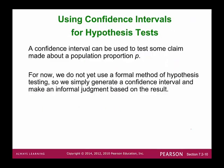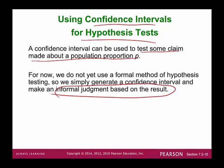A confidence interval could be used to test some claim made about the population proportion P. However, it only gives us an informal judgment based on the result. In Chapter 8, we're going to use a complete new set of methods to do hypothesis testing, but the confidence interval only gives us an informal judgment about any claim or hypothesis.